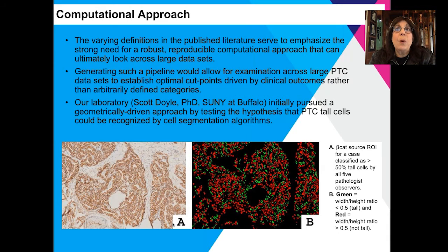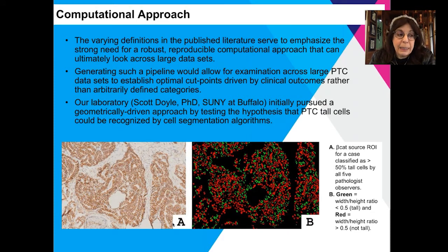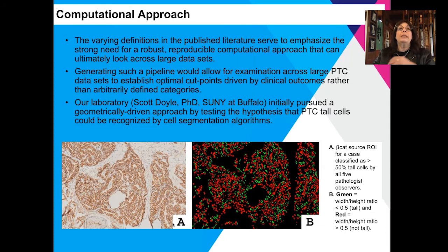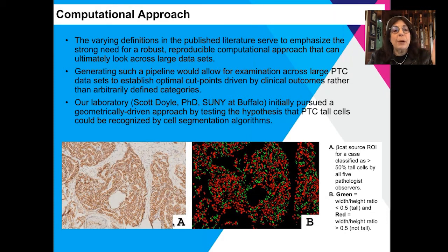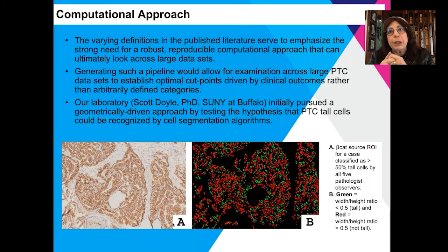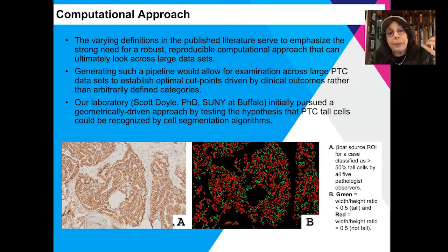If one could develop a computational pipeline to recognize PTC — tall cell variant of PTC — it would first of all be robust and reproducible. It would have the ability to look over large data sets and look at different cut points. Importantly, a definitional cut point could be established based on outcome, not based on arbitrary categories that have been defined by pathologists.